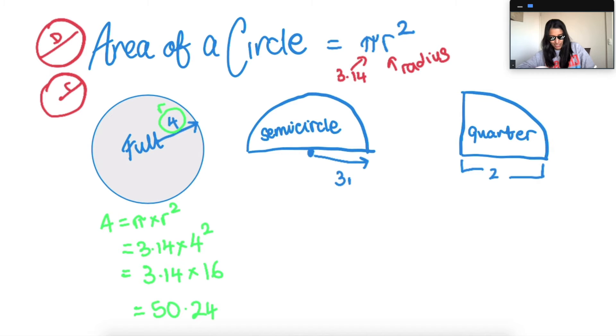Cool. We don't have a unit so we'll just keep it plain for now, but we'll change that for the next ones. All right, we've got a semicircle which is half of a circle, so we'll find the area.